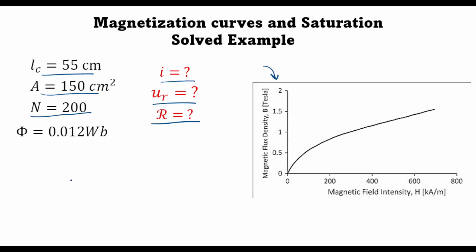So we will start off by this well-known relation that the flux is equal to the magnetic flux density times the cross section area. We know the flux is given as 0.012 Webers.